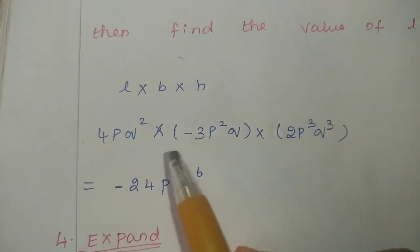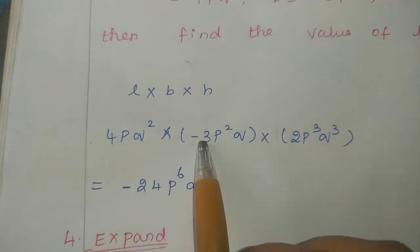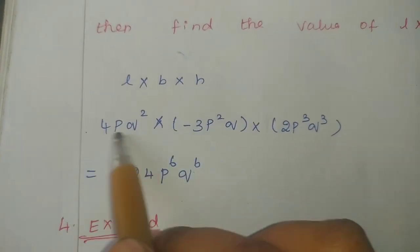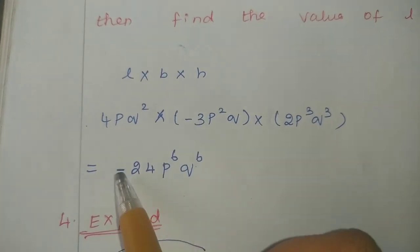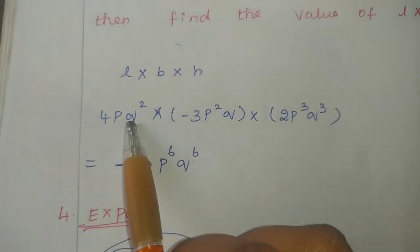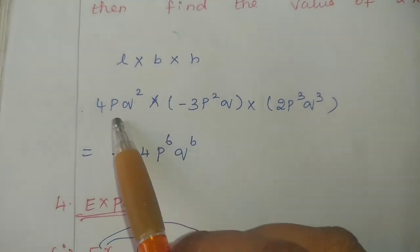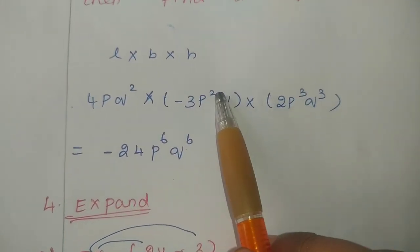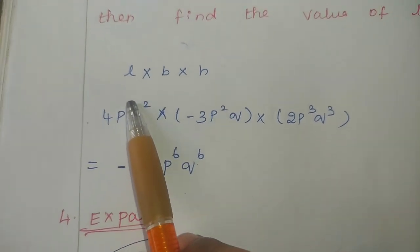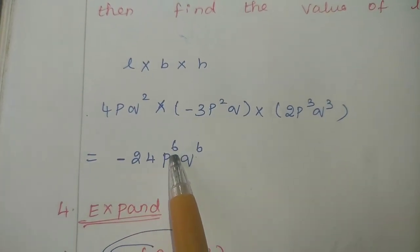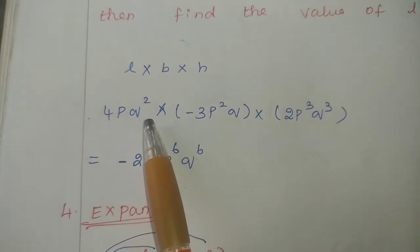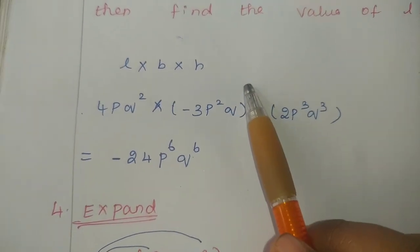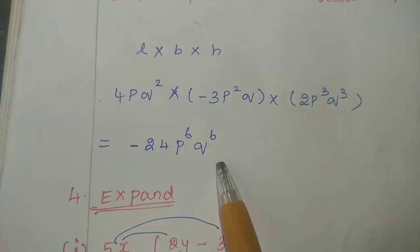First, multiply the numbers: 4 times 3 is 12, times 2 is 24. There is one minus sign, so the answer is minus 24. Next, for p: we have p, p, p — three p's. Add the powers: 3 plus 2 is 5, plus 1 gives p to the power 6. For q: q square times q — no exponent means consider 1 — so 2 plus 1 is 3, giving q cubed. Then 4, 5, 6. Clear?